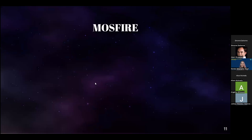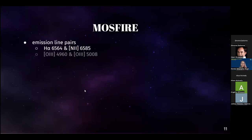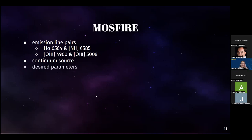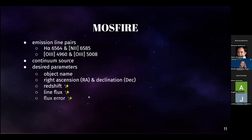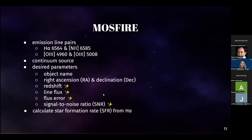I analyzed nearly 100 objects from the MOSFIRE spectroscopic data for the quasar 3C9, using a program written by my grad student mentor, Sanchit Sabloch. I used it to look for pairs of emission lines, such as H-alpha and N2, or an O3 doublet — which is hydrogen, nitrogen, and then oxygen — to calculate certain desired parameters such as redshift, line flux, flux error, and signal-to-noise ratio. I also used the results of a 2011 paper by Murphy et al. to compute the star formation rate, or SFR, in these galaxies from the observed H-alpha luminosity. Since CIGALE also computes SFRs, they can be directly compared with the rate derived from these direct H-alpha measurements.